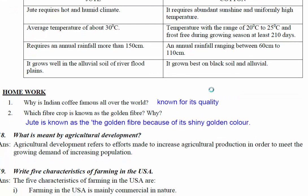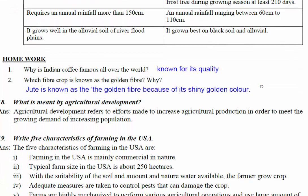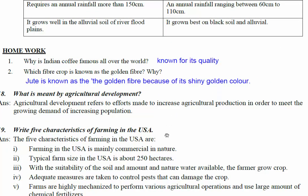Homework: why is Indian coffee famous all over the world? Because Indian coffee is known for its better quality. Which fiber crop is known as the golden fiber and why? Jute is known as the golden fiber because of its shiny golden color.